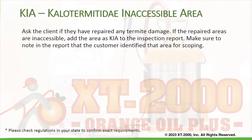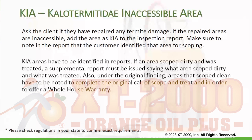Ask the client if they've repaired any termite damage. If the repaired areas are inaccessible, add the area as KIA to the inspection report. Make sure to note in the report that the customer identified that area for scoping. KIA areas have to be identified in reports. If an area scoped dirty and was treated, a supplemental report must be issued saying what areas scoped dirty and what was treated.